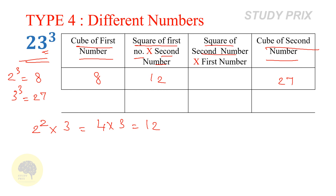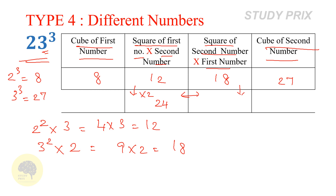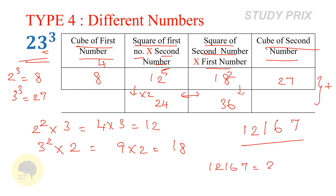In the third column write the square of the second number multiplied by the first number: 9 times 2 is 18. In the two middle cells, double the upper numbers: 12 times 2 is 24, and 18 times 2 is 36. Now add the two rows. 27: write 7, carry 2. 2 plus 18 is 20, plus 36 is 56: write 6, carry 5. 8 plus 12 is 20, plus 24 is 44, plus 5 is 49... wait — 4 plus 8 is 12, plus 24 is 36, plus 5 is 41: write 1, carry 4. 4 plus 8 is 12. Therefore the cube of 23 is 12167.